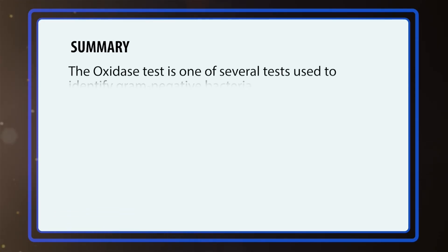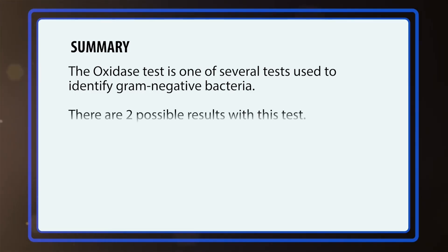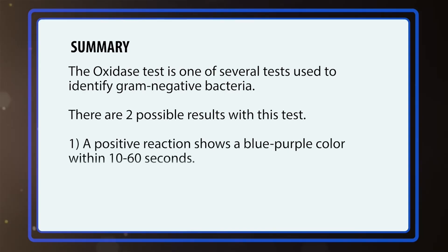In summary, the oxidase test is one of several tests used to identify gram-negative bacteria. There are two possible results with this test: a positive reaction which shows a blue-purple color within 10 to 60 seconds, and a negative reaction which shows no color within 60 seconds.